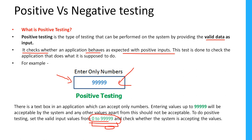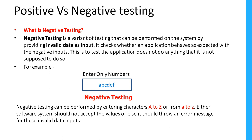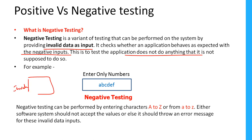Now let's see negative testing. Negative testing is a variant of testing performed on the system by providing invalid data as an input. It checks whether an application behaves as expected with negative inputs. This is to test that the application does not do anything it is not supposed to do. If we test an application with invalid data, it should restrict the functionality.